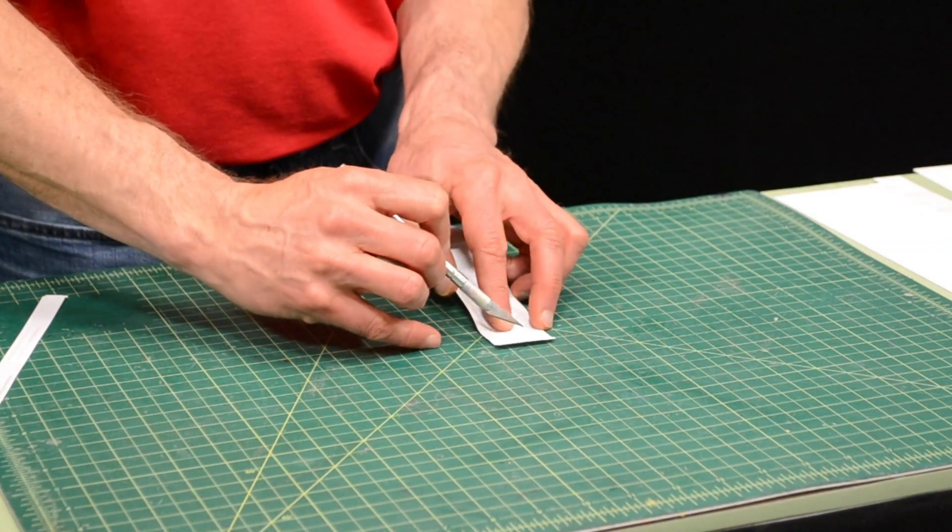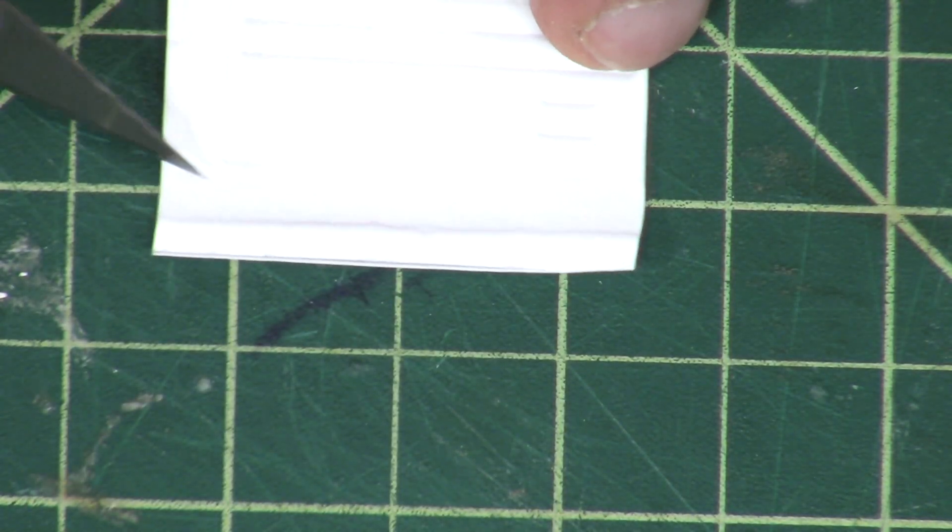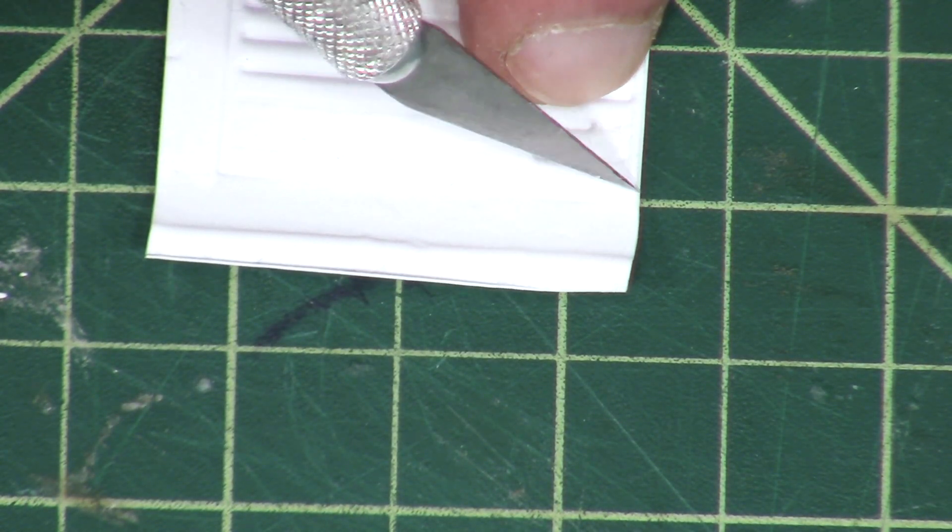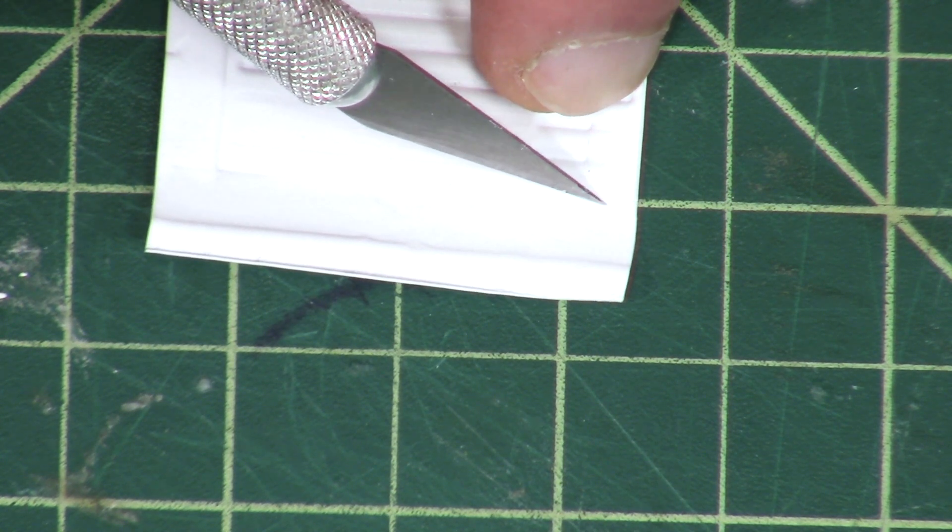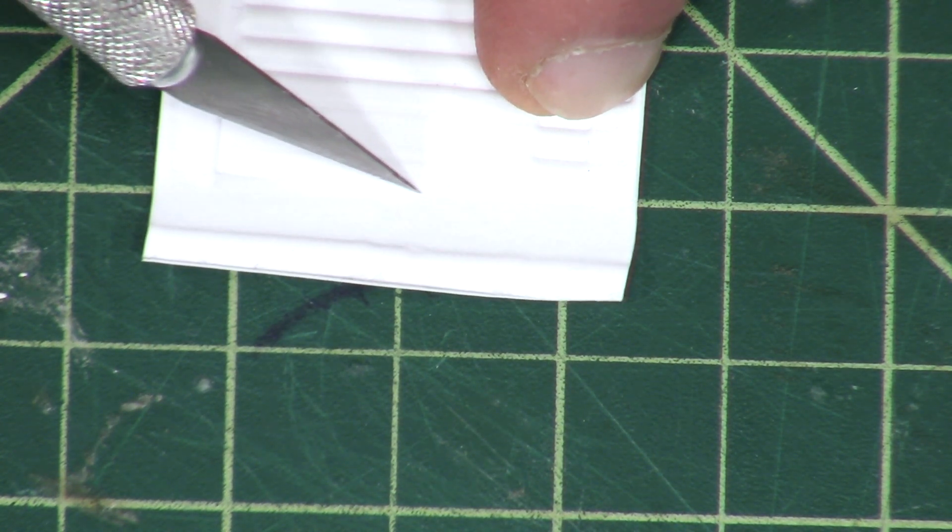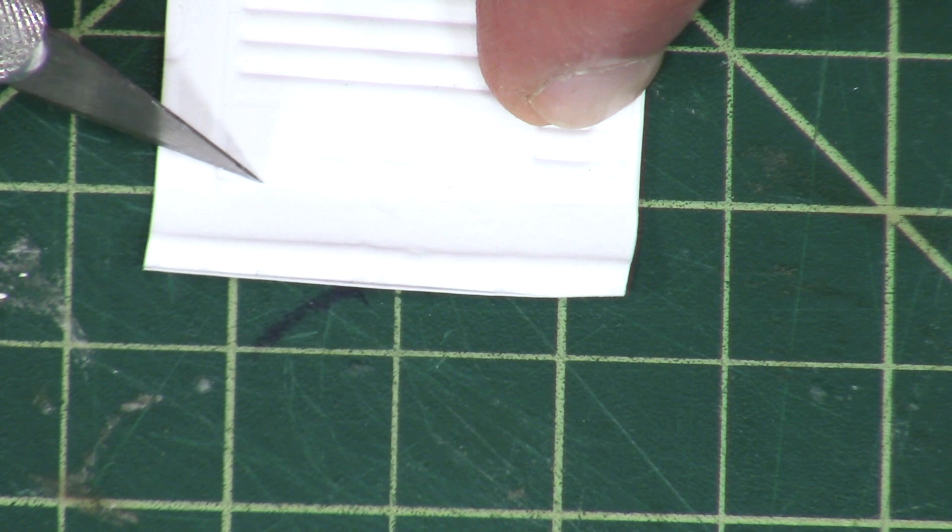On the end, it's a little less defined, but you can just run your knife in that corner again. And we're going to trim this up later so that it fits the tube exactly.